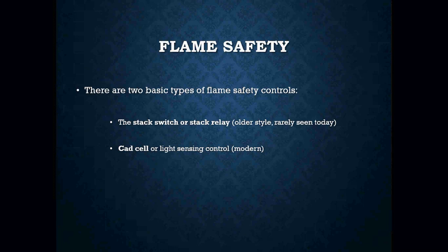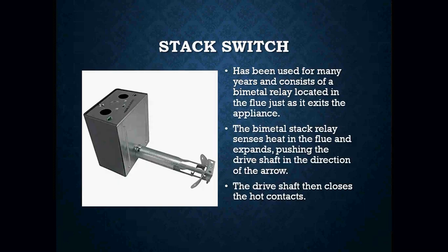So there are two types of flame safety controls. You have your stack switcher, better known as the stack relay — it's an older-style unit that is very rarely seen today, but you still need to be aware of it, and if you do run into one, chances are you're just going to replace it. Then you have your CAD cell type relay, which is really a light-sensing type control found on a lot of our more modern units.